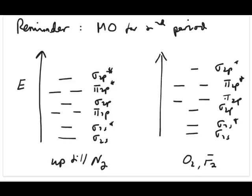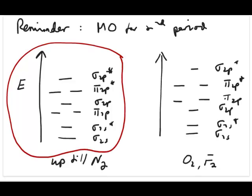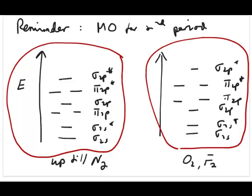As a reminder before we start with the examples, there are two different types of energy diagrams possible for second period elements. Up till nitrogen, you use this particular ranking of molecular orbitals: sigma 2s, sigma 2s star, then pi 2p and sigma 2p, then pi 2p star and sigma 2p star. Whereas if you have oxygen or fluorine as your template, the only difference is the flipping between pi 2p and sigma 2p.